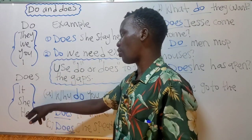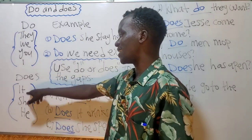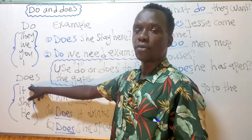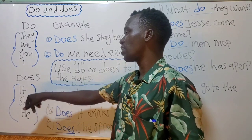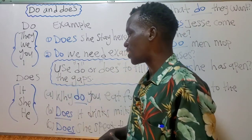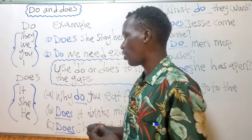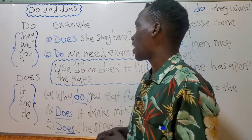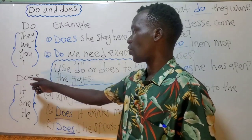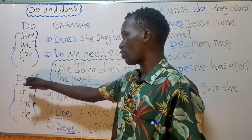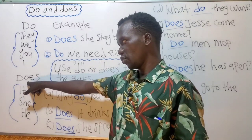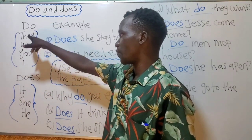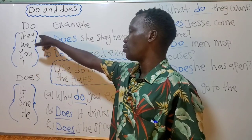'Does' is used with singular pronouns such as 'it,' 'she,' and 'he.' 'It' refers to an animal or any object. 'She' is a girl or a woman, and 'he' is a man. So when you are using any of these pronouns, you will use 'does.' And when you are using the plural pronouns, you will use 'do.'